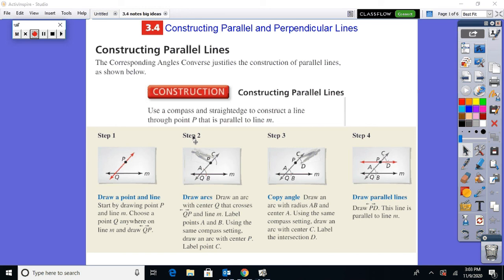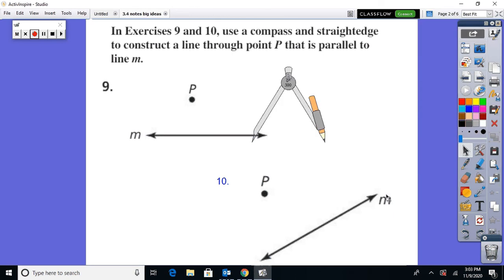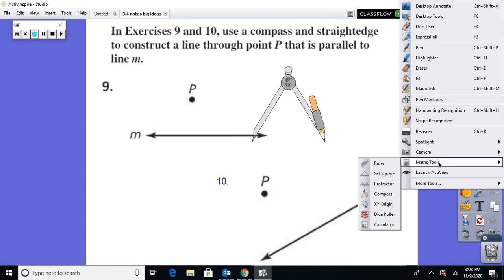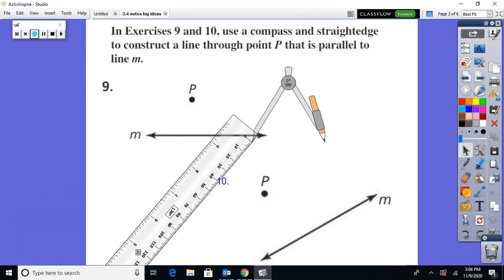Use a compass and straight edge to construct a line through point P that is parallel to line M. So you can see the steps here. We're going to use the fact that corresponding angles converse. So if we have corresponding angles congruent, the lines are parallel. So watch how cool this is. Let me get my math tools here. So the first thing we want to do is any spot on line M.